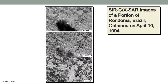Here are radar images of a portion of Brazil. The X-band radar VV image, the C-band HV image at a different wavelength, and the L-band HV image at an even larger radar wavelength are shown. Just by looking at these images you can see that each different polarization combination highlights different types of features on the ground.